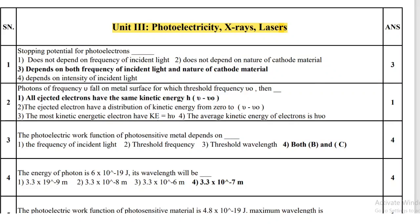Welcome students. This is the third chapter of the Applied Science Physics course, course code 22202. This is for civil and mechanical group. Unit number three is photoelectricity and x-rays analysis.